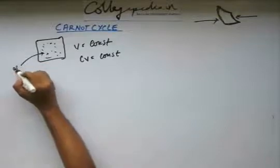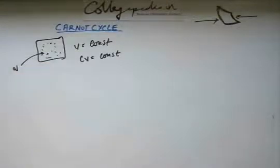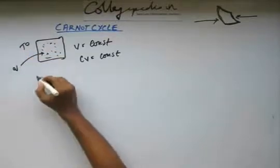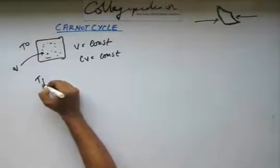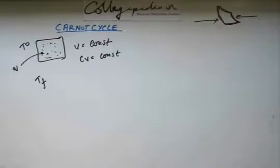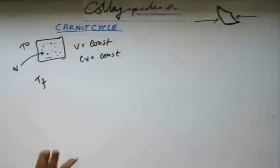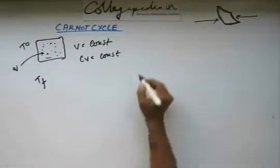Then the question is find out the entropy change that will occur in this ideal gas because of the heat that we are providing from outside. Suppose I have added Q and the temperature initially is T naught and later it changed to T final. If this information is given to you, now you have been asked what is the change in entropy of the system.